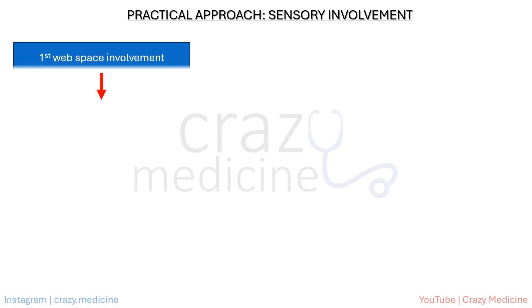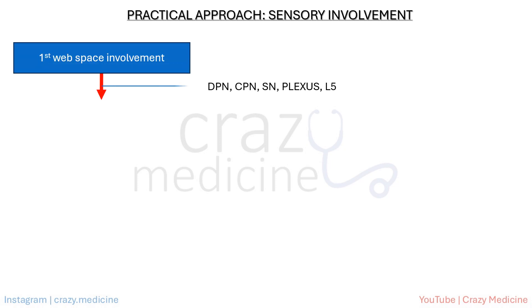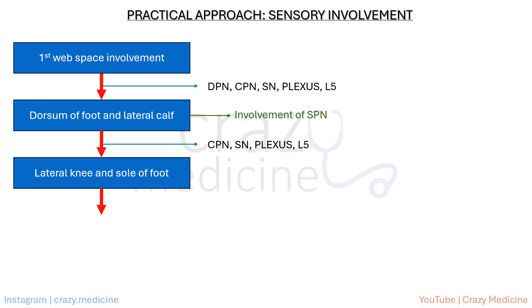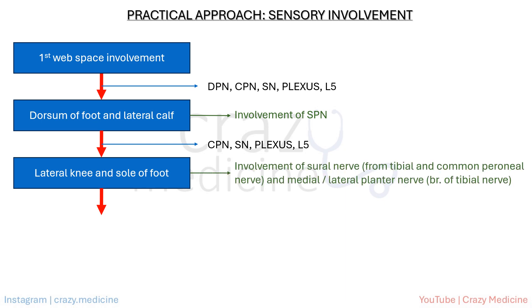A similar approach can be applied to sensory involvement when evaluating the patient. If there is sensory loss at the first web space, the lesion could be anywhere from the deep peroneal nerve, common peroneal nerve, sciatic nerve, plexus, or roots — providing an initial broad differentiation. If there is also sensory involvement on the dorsum of the foot and lateral calf, this suggests involvement of the superficial peroneal nerve, ruling out isolated deep peroneal nerve involvement. If sensory loss is noted at the lateral knee and sole of the foot, this points to involvement of the sural and tibial nerves, eliminating the common peroneal nerve.